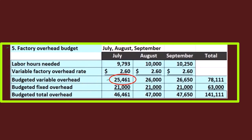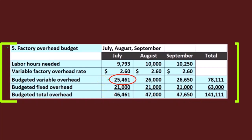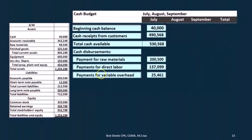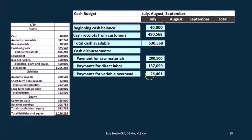We're just taking the variable portion. You might be asking why we aren't taking the total — because the fixed portion in this case was depreciation, which is not a cash item and therefore not included on the cash budget. So there we have the 25.